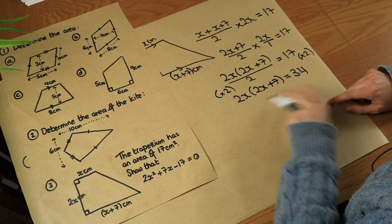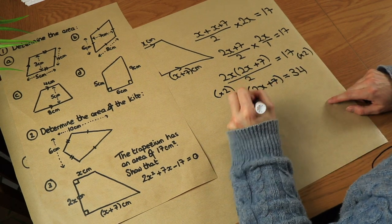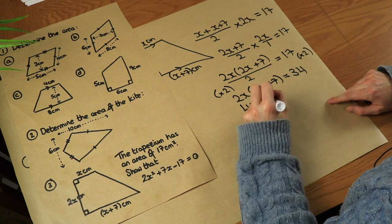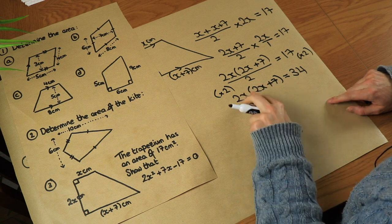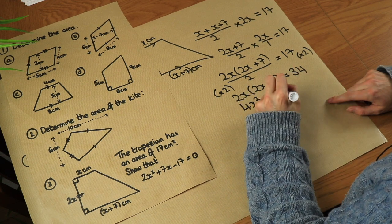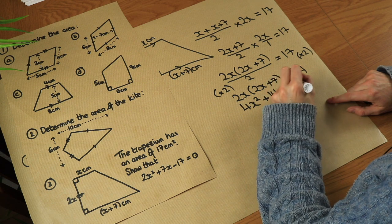Let's expand the bracket. So 2x times 2x is 4x squared, and 2x times 7 is 14x. And that equals 34.